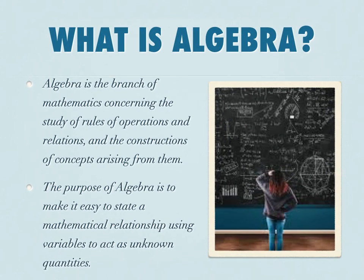What exactly is Algebra? Algebra is the branch of mathematics concerning the study of rules of operations and relations, and the constructions of concepts arising from them. The whole purpose of it is to make things easy — to state a mathematical relationship using variables to act as unknown quantities.